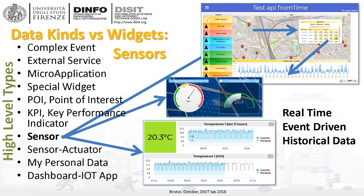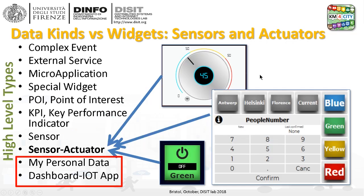The historical value of sensors can also be accessed from the map, so you can go into the map and see the last seven days, last months, last days, and the current value. There is also space for sensors and actuators, so it's possible from the dashboard to send messages and act on the field or the back office.